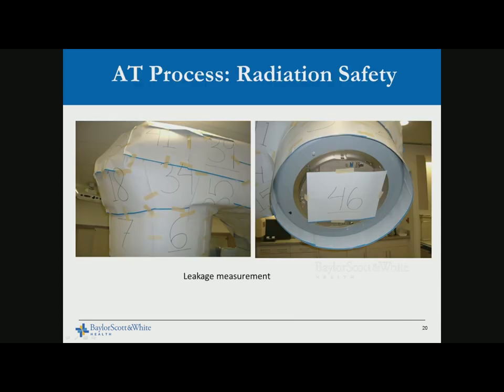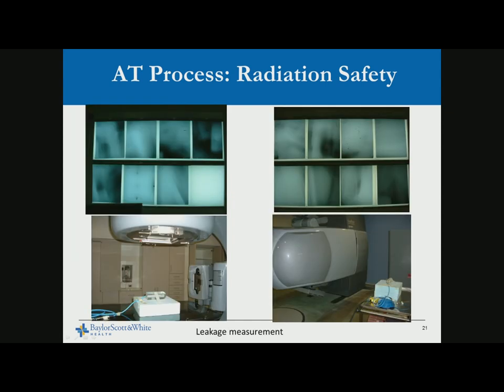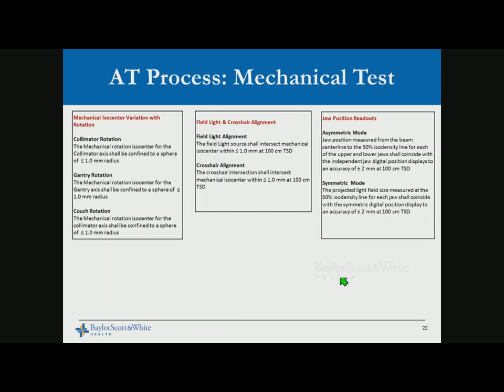For the leakage measurement process, first identify the highest spot of leakage by wrapping things around the LINAC, closing the jaws, and delivering high monitor units. Once you identify the highest leakage spot, make a measurement at isocenter and at one meter from the source to determine whether it is 0.1% of the isocenter dose. These tests need to happen sequentially: general safety, then radiation safety, then mechanical tests.